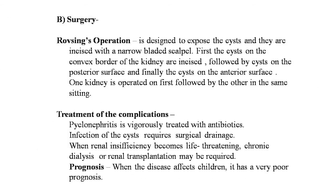The surgical treatment for polycystic kidney is the Rovsing operation, designed to decompress the cysts — they are incised with a narrow-bladed scalpel. First the cysts on the convex border are incised, followed by those on the posterior surface, and finally the anterior surface. One kidney is operated on first, followed by the other in the same sitting. Treatment of complications: pyelonephritis is vigorously treated with antibiotics; infection of cysts requires surgical drainage. When renal insufficiency becomes life-threatening, chronic dialysis and renal transplantation may be required.